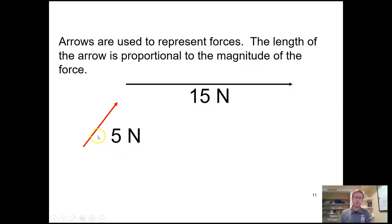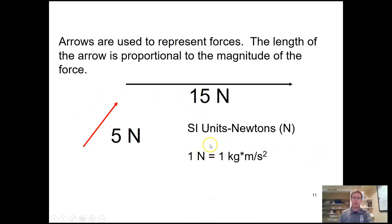Forces, because we care not only about their magnitude but also their direction, are vectors. So we represent them with arrows. Here's a 5-newton vector and a 15-newton vector. The SI unit for force is the newton — 1 newton equals 1 kilogram multiplied by 1 meter per second squared. You should get used to expressing your forces in newtons, though you'll also see pounds used as a unit of force at times.